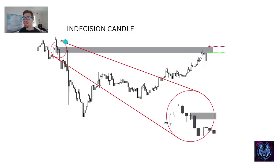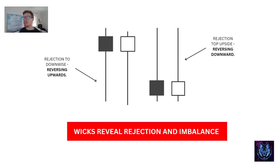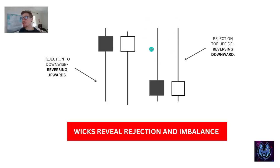Here are some examples of indecision candles. We can use them as reversal signals, as well as excellent supply and demand signals. Here are some excellent examples — these pin bar candles we will find at these reversal points above or below the contraction line. If we get this pin bar here, it's showing you rejection to the downside. Whichever direction the major wick is pointing in, that is where the rejection is coming from, which means it's reversing to the upside. Here is rejection to the upside and reversing to the downside.